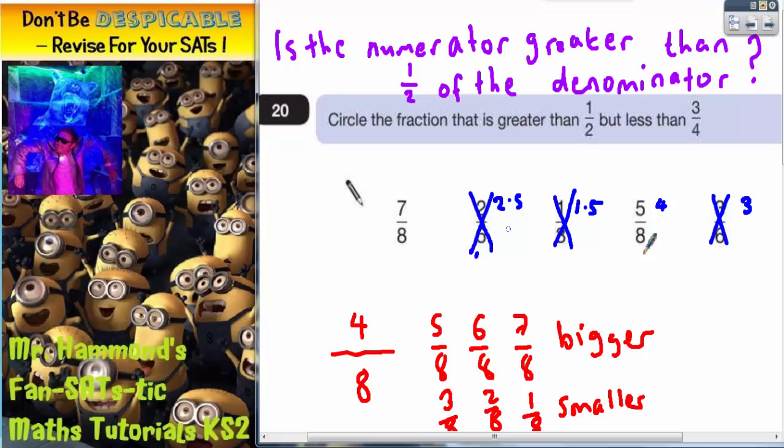So actually, we've only got two left. So we've dealt with the clue that says greater than a half. Now we need to deal with a second clue. It's going to be less than three quarters. Now a little bit of knowledge here about equivalent fractions will help us.